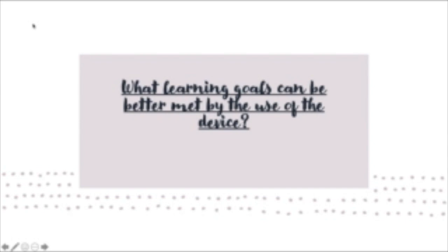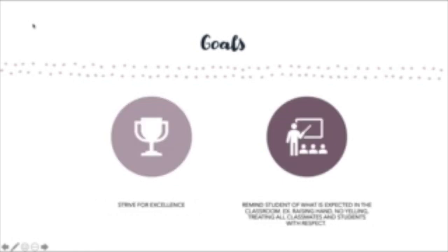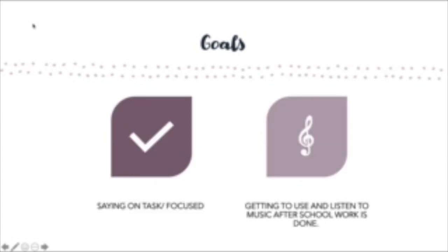What learning goals can be met by the use of this device? The first goal is time management — the animal can encourage students to stay on task. The second is striving for excellence: the animal can remind students of what is expected in the classroom, such as raising their hands, no yelling, and treating all classmates with respect. The last goal is staying on task and focused — this toy can be used as a reward. After finishing their work, students can turn on some music and play with the animal.